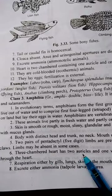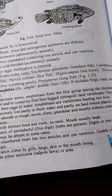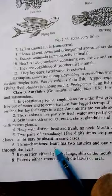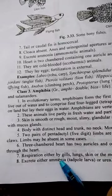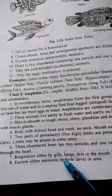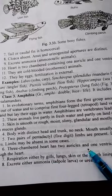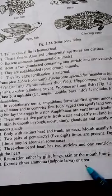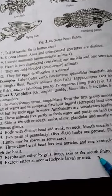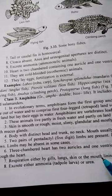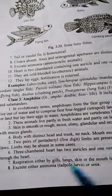They have a three-chambered heart with two auricles and one ventricle. They have double circulation. Respiration occurs through gills, lungs, skin, and mouth lining.